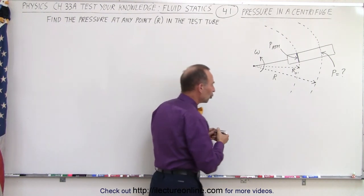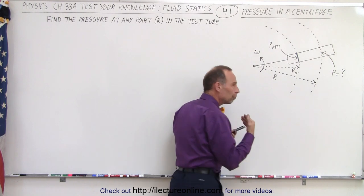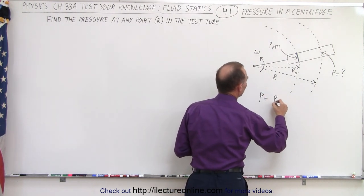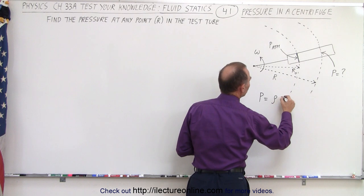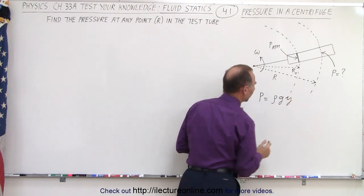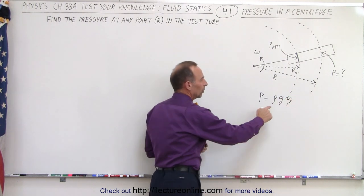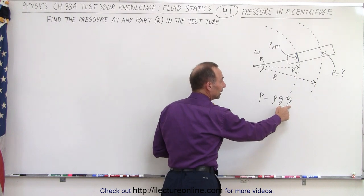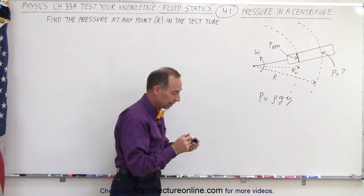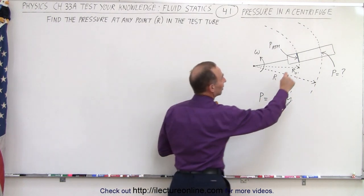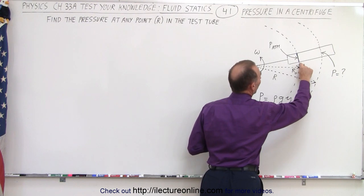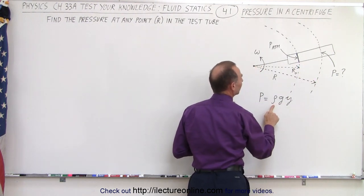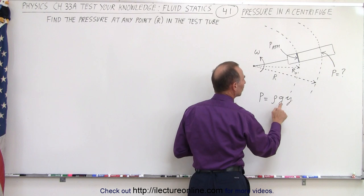Normally the pressure inside a fluid is equal to rho g times y — the density of the liquid times acceleration due to gravity times the depth inside the liquid. In this case, the depth inside the liquid would be y going further into the liquid, and the density of the liquid is still density.